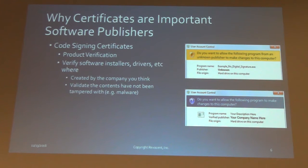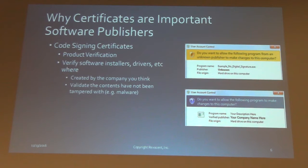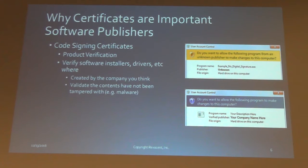For software publishers, it's critical that when they distribute software and it runs on a customer's computer, the customer can have some kind of assurance that it's really from that publisher. For a long time in the Microsoft world, software publishers would create drivers and installers and just ship them out. In today's world, there's a lot of malware, so Microsoft's Windows for the last ten years or so has built-in certificate validation of software — both at a driver level and at an application level. You can't install certain types of software without having that software signed with a code signing certificate.